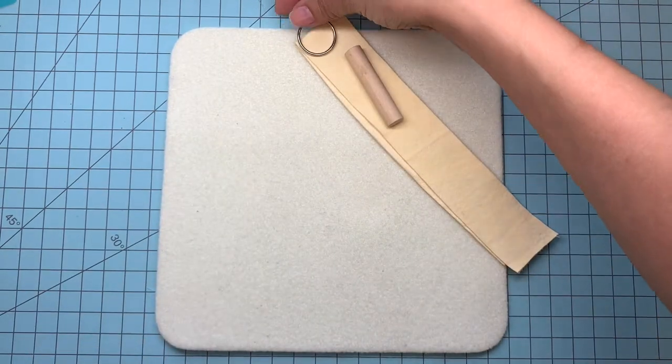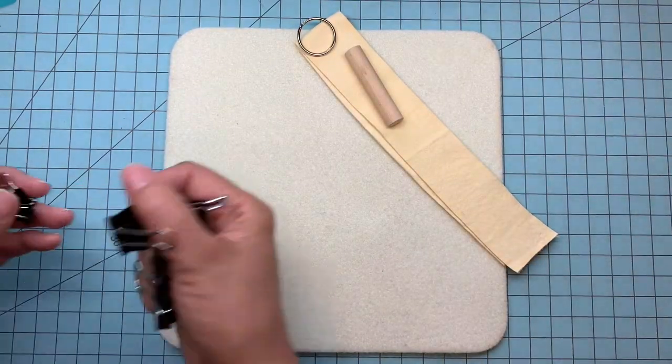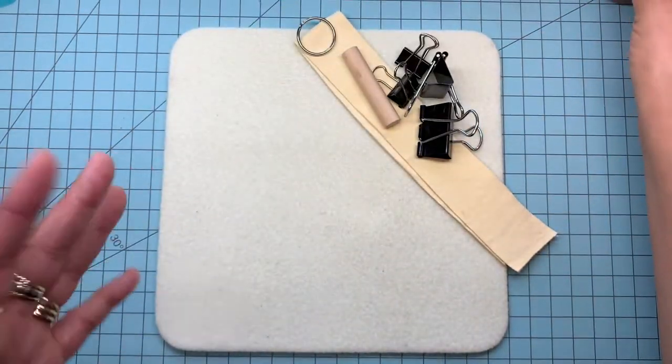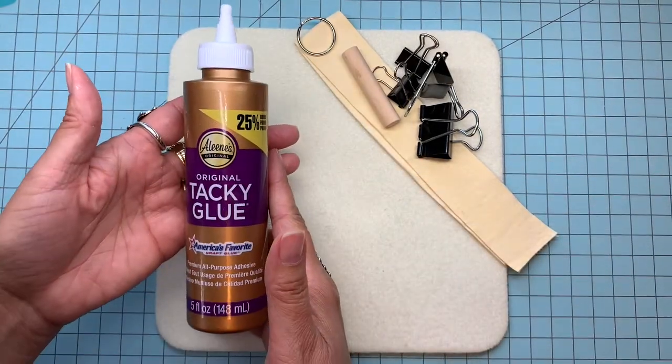This is the key ring to go in there. Some bulldog clips, or any kind of clips, and some glue.